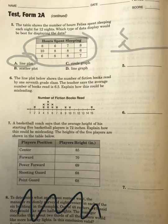For number 6, the line plot below shows the number of fiction books read by one 7th grade class. The teacher says the average number of books read is 6.5. Explain how this could be misleading. So we have an outlier of 15, which can throw off our mean and be misleading.